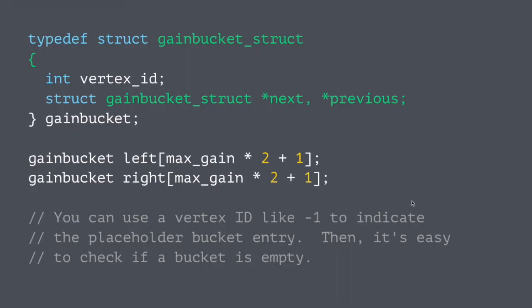All right, I want to talk a little bit about the C code that you might use on the back end of this sort of thing. I've got a gain bucket structure, we're going to keep track of the vertices, and so I've got a vertex ID, and also next and previous, forward, back, whatever your favorite flavor is, pointers, to implement the doubly linked list.